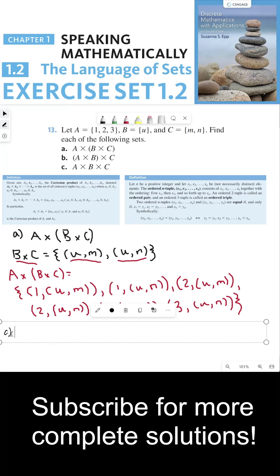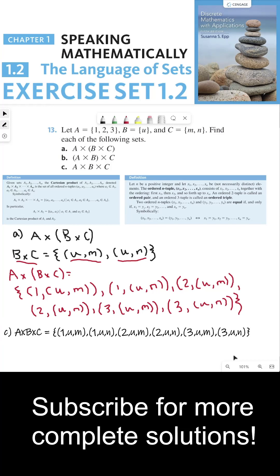For part C, there are no parentheses. It's just A cross B cross C. So this is, by definition, these are ordered triples. The first element is in A. The second element is in B. The third element is in C. And there are a lot of these triples. And those are the six elements.